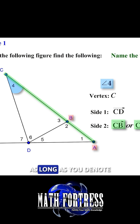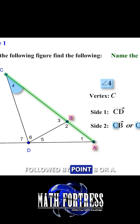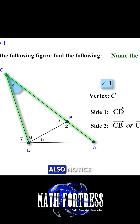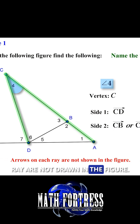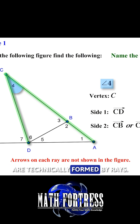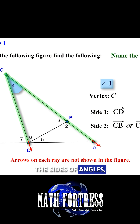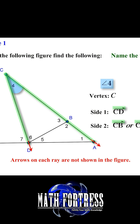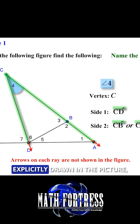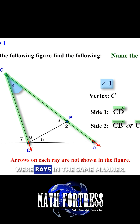In both ways, as long as you denote the vertex C first followed by point B or A. Also notice that the arrows on each ray are not drawn in the figure. Recall that the sides of an angle are technically formed by rays. When you name the sides of angles we usually name them as if they were rays, even though the ray is not explicitly drawn in the picture, we still denote them as if they were rays.